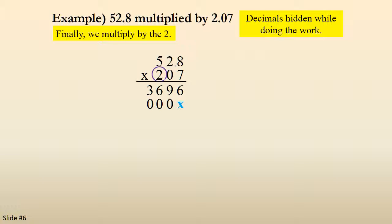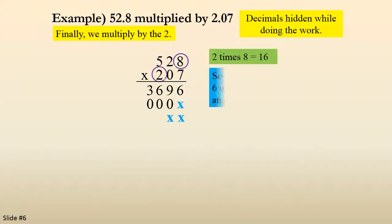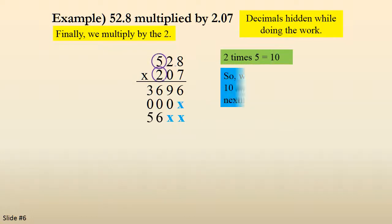Again, now the 2 is in the hundreds position so I'm going to put placeholders in the ones and tens columns. 2 times 8 is 16. Write the 6, carry the 1. 2 times 2 is 4 plus the 1 is 5, so I put down the 5. And then 2 times 5 is 10, so I write down the 10.